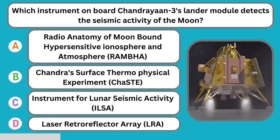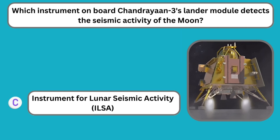Question number twenty-three: Which instrument on Chandrayaan 3's lander module detects seismic activity of the moon? The correct answer is the Instrument for Lunar Seismic Activity, ILSA.